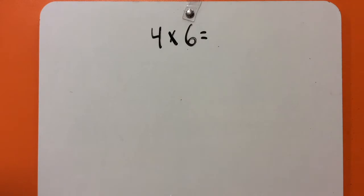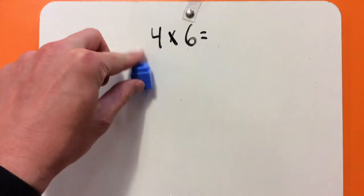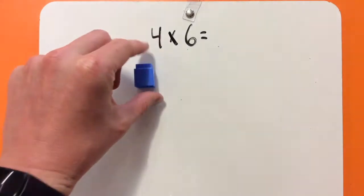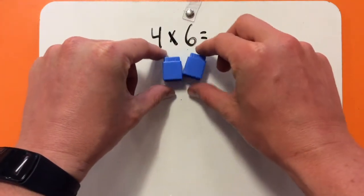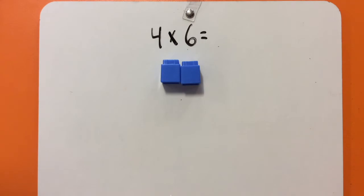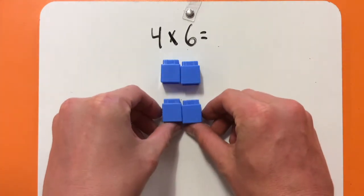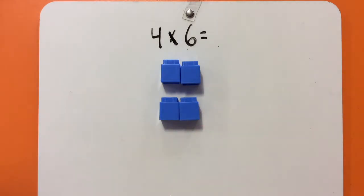To solve any multiplication problem that involves 4, there's actually a really simple method. For example, if we were going to do 1 times 4, we know that that's 4 — pretty straightforward. So, if I have my 1 cube there and I double it, that gives me 2. And if I double that again, it gives me 4. So, if we double any number and then double it again, that's actually finding our 4 times tables.